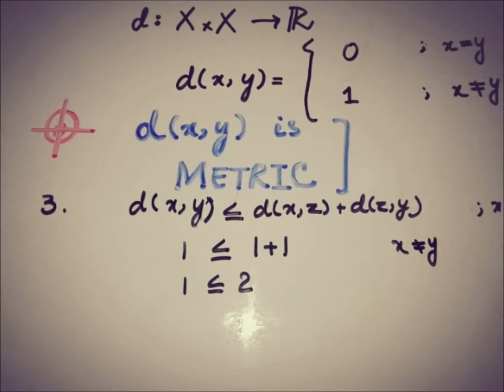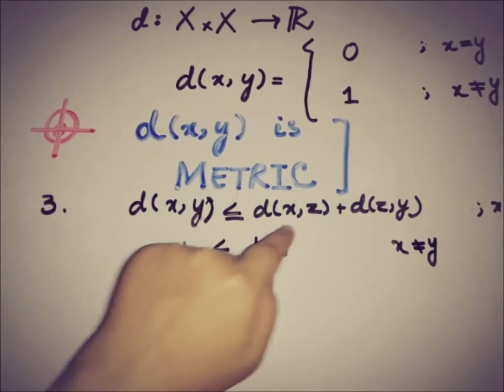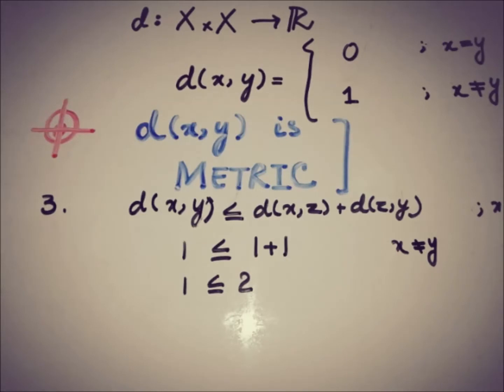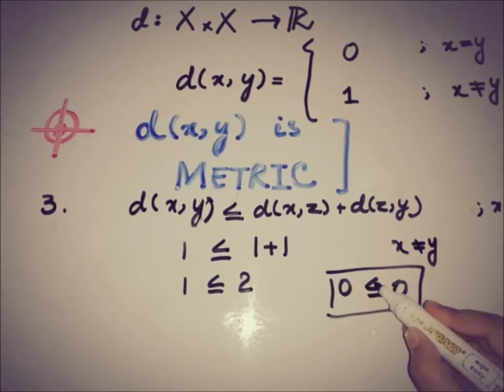This is also obvious if we take x equals y. So d(x,y) where x equals y gives 0, and 0 and 0. So we get 0 is less than or equal to 0. This is also a true inequality because there is a less than or equal to sign here. So this implies that this triangular inequality is true for all values of x.